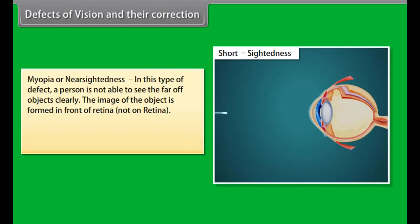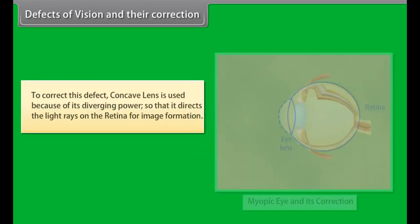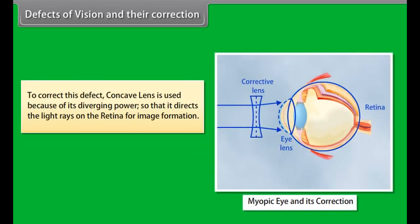Myopia or nearsightedness: In this type of defect, a person is not able to see the far off objects clearly. The image of the object is formed in front of retina. It is caused either due to elongation of eyeball or due to excessive curvature of eye lens. To correct this defect, concave lens is used because of its diverging power, so that it directs the light rays on the retina for image formation.